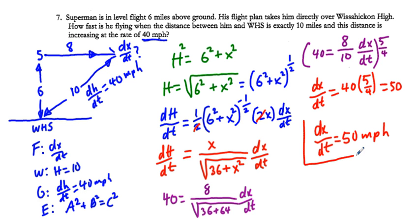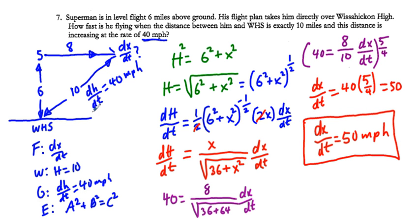So dx/dt = 50 miles per hour — Superman is flying at 50 mph. The distance was increasing at 40 mph, and if you think about it that does kind of make sense.